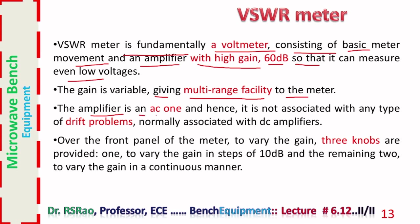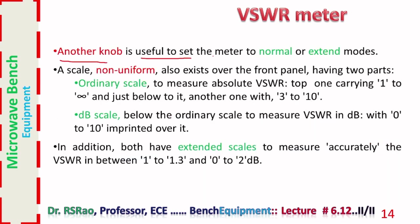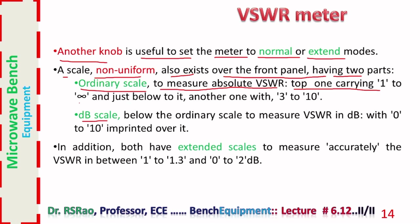The gain of this amplifier is variable, giving a multi-range facility to the meter. The amplifier is an AC amplifier and is not associated with any drift problems — drift problems are associated with DC amplifiers. Over the front panel, to vary the gain, three knobs are provided: one to vary gain in steps of 10 dB, and the remaining two to vary gain in a continuous manner. Another knob sets the meter to normal or extend modes. A non-uniform scale also exists over the front panel with two parts.